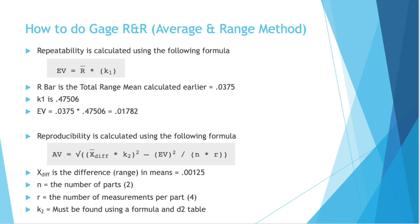Reproducibility is calculated using the following formula. av equals the square root of xdiff times k2 squared minus ev squared divided by n times r, and it's the square root of everything. Again, xdiff being the difference, the range in means, .00125, n, the number of parts in the study, 2, r, the number of measurements per part, 4, and k2, it must be found using a formula in d2 table. So it's like k1, but slightly different.